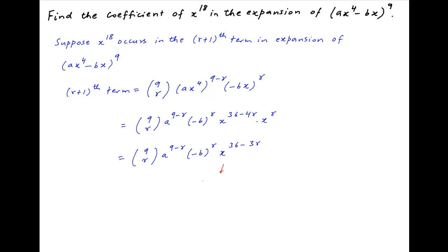Now if this term contains x raised to the power 18, then the power of x, which is 36 minus 3r, must be equal to 18. Therefore 3r is equal to 18, and it follows that r is equal to 6.